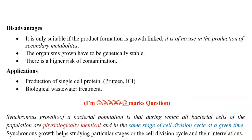Now we look at the disadvantages of continuous culture. It is only suitable when product formation is a growth-linked process, and may not be useful for production of secondary metabolites — such as antibiotics — since these are produced in the stationary phase, which may not be clearly observed in continuous culture as it is maintained in a continuous phase. Additionally, organisms grown in continuous cultures must be genetically stable, and genetically unstable organisms may not be successfully grown in this system compared to the closed system. There is also a high risk of contamination in this open system.